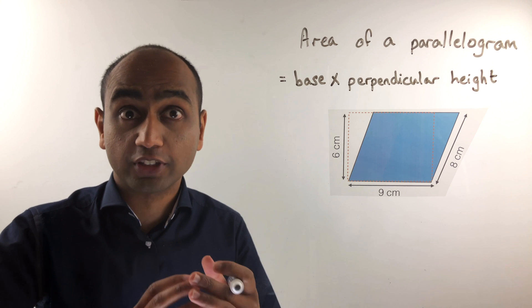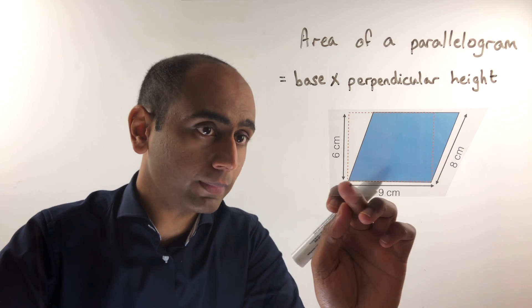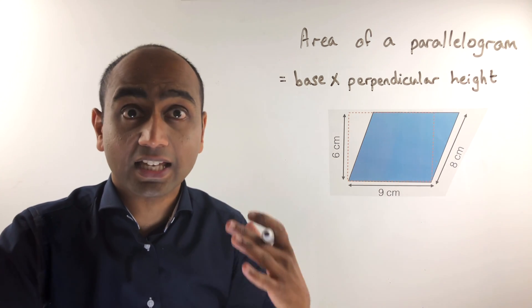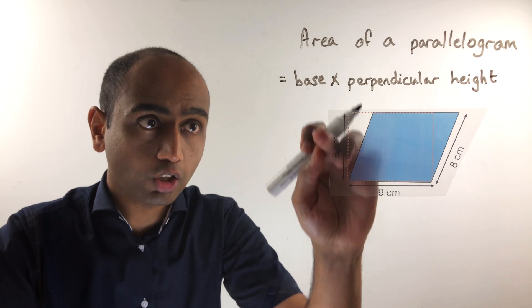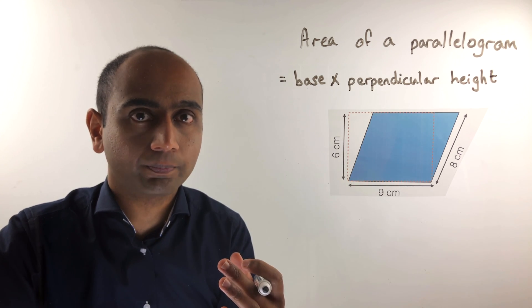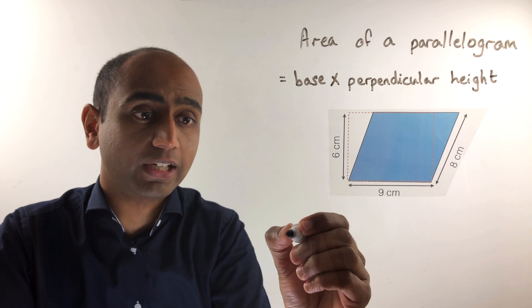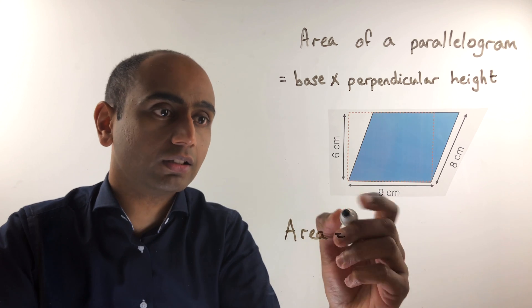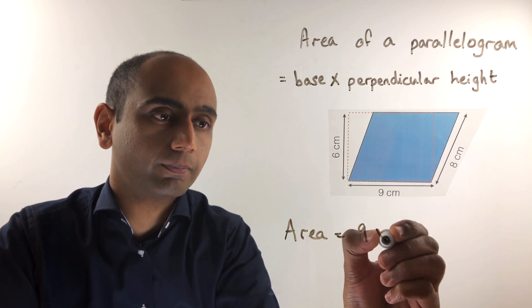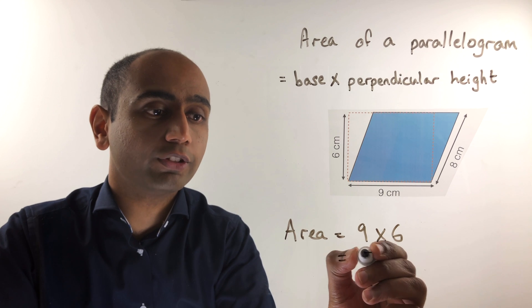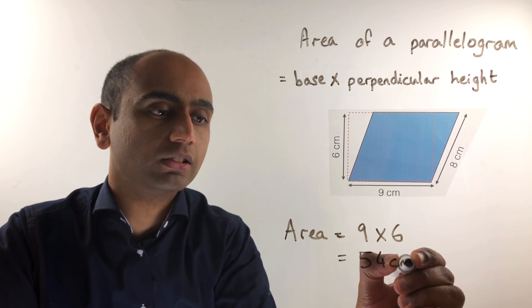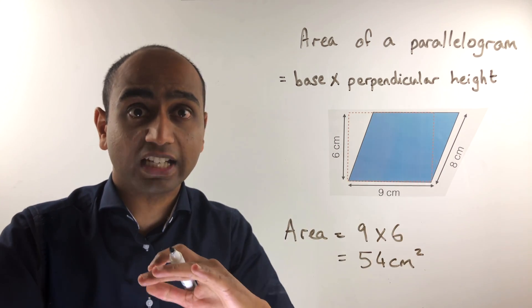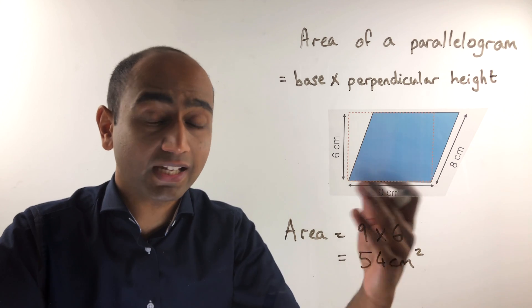Let's take a look at the first example. We've got a parallelogram where this side is 9 centimetres long and this side is 8 centimetres long. The height of the parallelogram is 6 centimetres. To find the area of this parallelogram, we are simply going to do the base times the perpendicular height, that is 9 times 6, and that gives us an answer of 54 centimetres squared. Notice we didn't use this number here at all. The 8 was irrelevant to the question. It was there to confuse us.